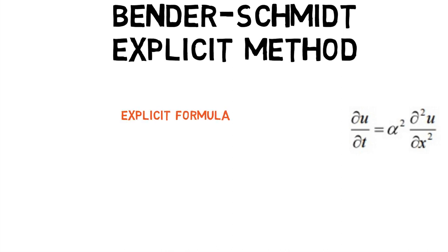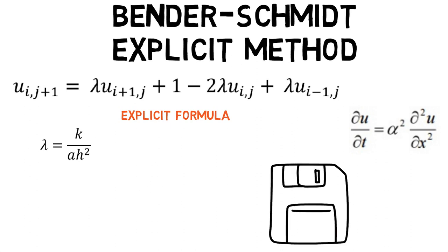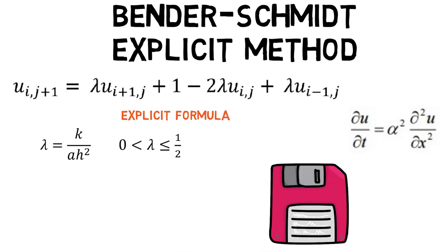First method to find a solution for PDEs is the Bender-Schmidt explicit method. Consider a general equation of the form ∂u/∂t = α²∂²u/∂x². The explicit formula is given by the following equation, where λ = k/ah². The explicit formula is only valid for values of 0 < λ ≤ 1/2.